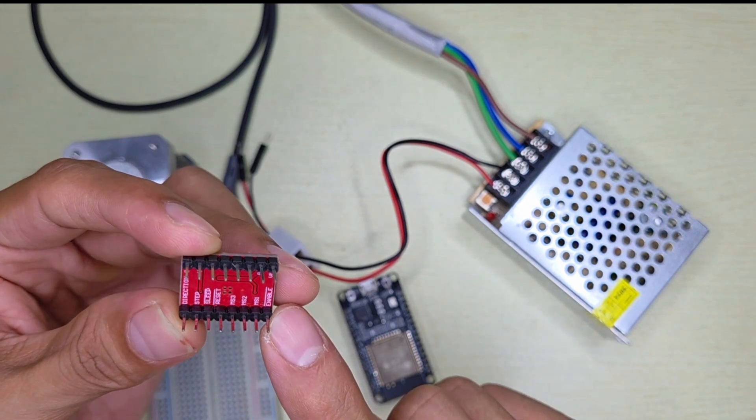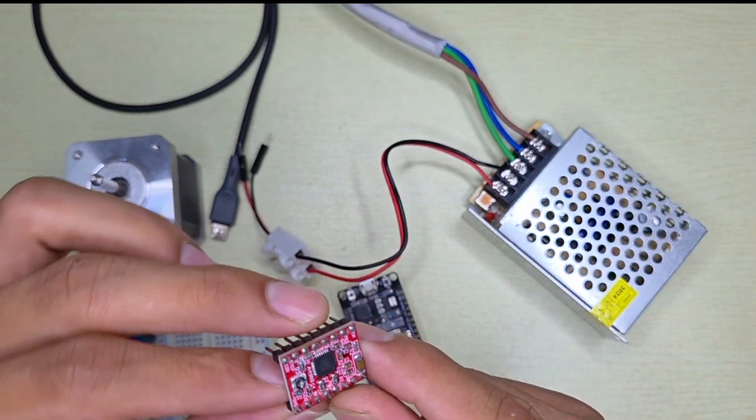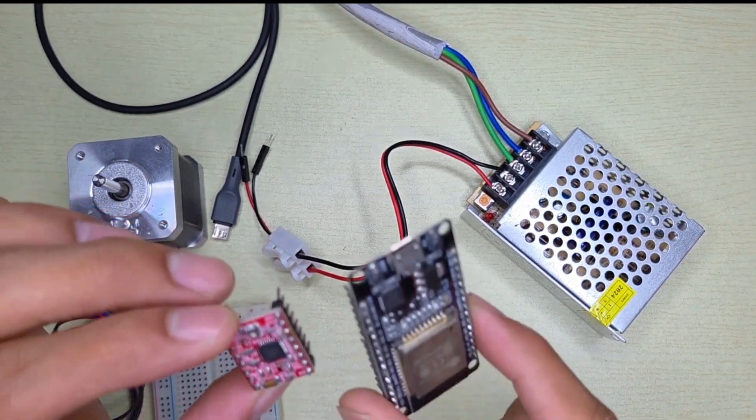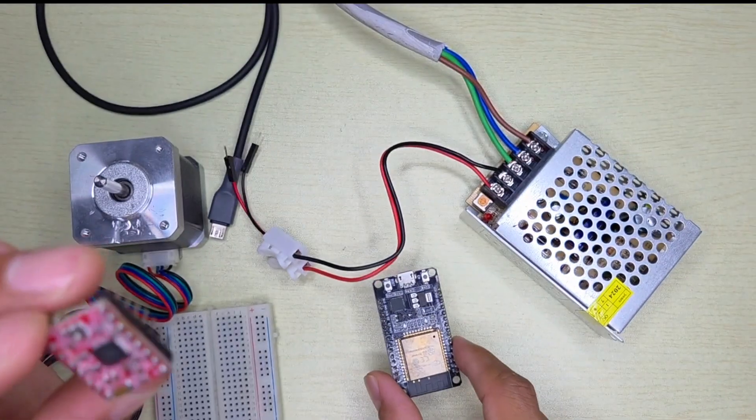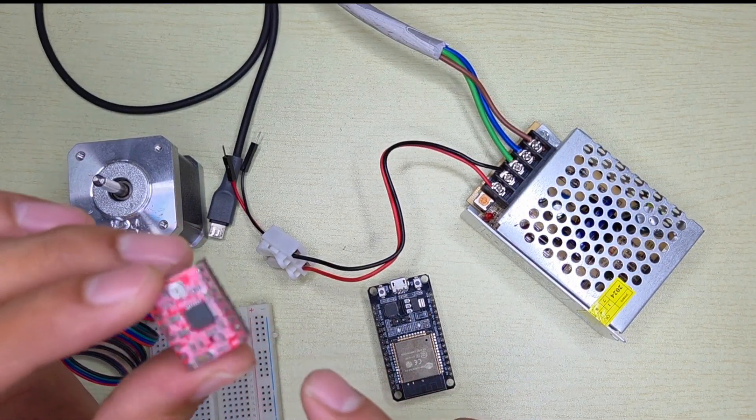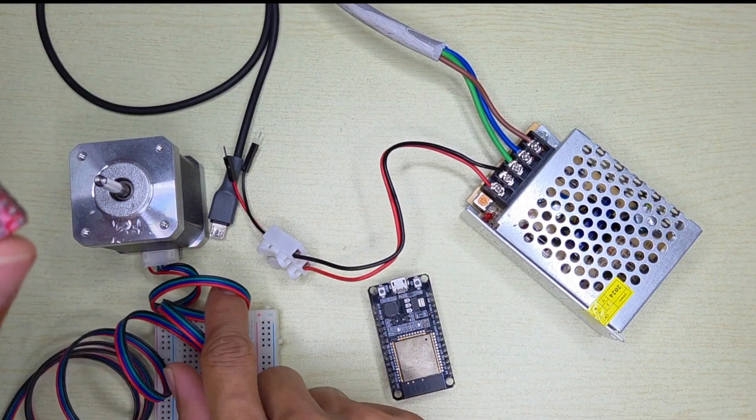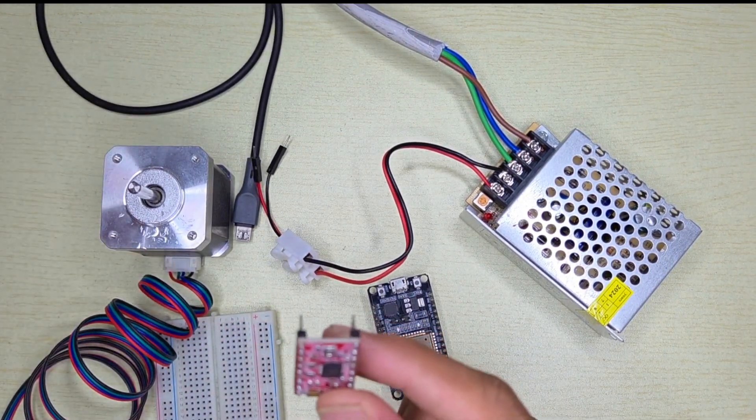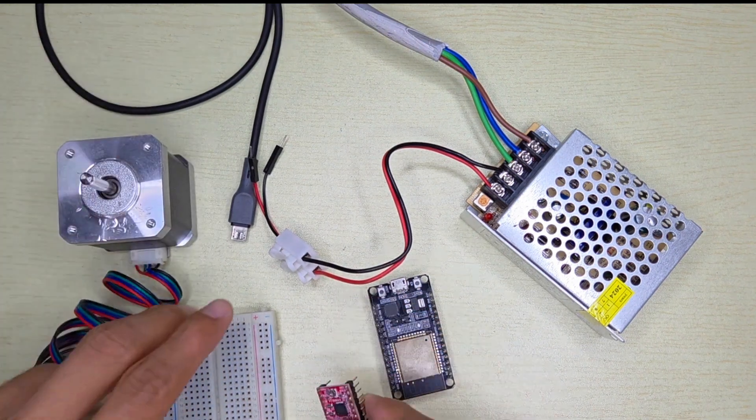Here there's a step and direction pin, and here sleep and reset. This is microstep 1, microstep 2, microstep 3, and here's the enable pin. We're not going to use Wi-Fi or Bluetooth, we're just going to control it the simple way just like Arduino. This motor driver can control any stepper motor, but this will handle up to only 2 ampere.